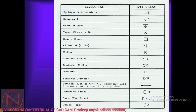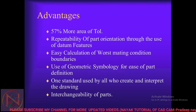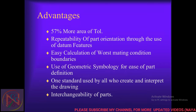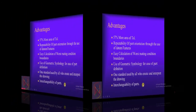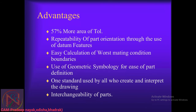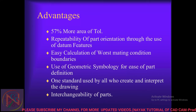The advantages of GD&T include 57% more area of tolerance, repeatability of part orientation for the use of the part, one standard used by all, and interchangeability of the part. It creates one variety — one standard to follow — for the same dimensions. It is also easily readable and understandable, providing one type of uniform understanding.